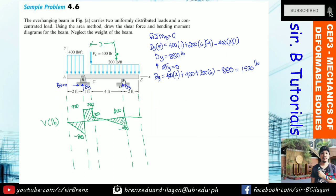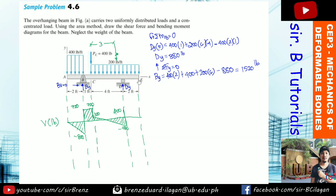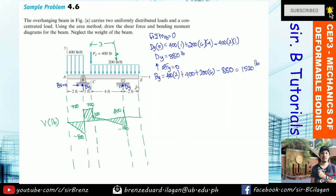At point D, the reaction Dy equals 880 pounds acts upward. Coming from negative 480, plus 880 = positive 400. From D to E there is a uniform load of 200 lb/ft. Check: 400 minus 200×2 = 0. The shear closes back to zero at E, confirming our reactions are correct.